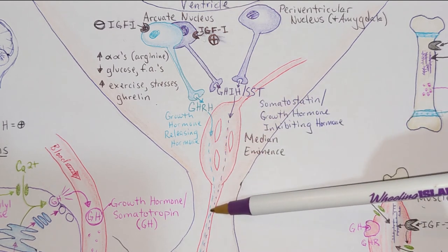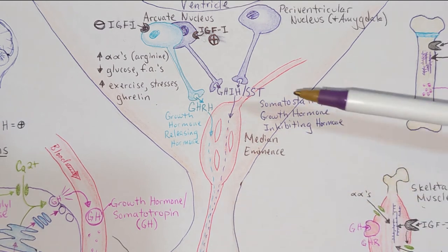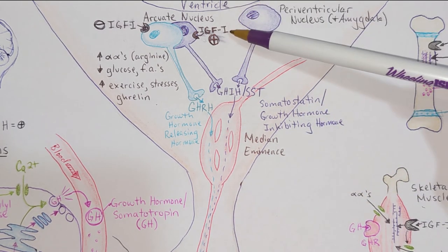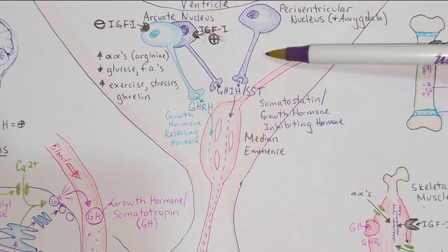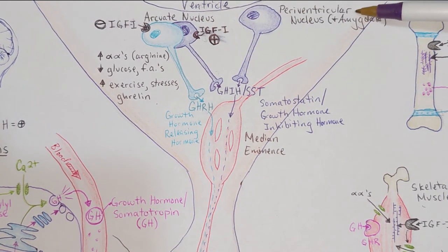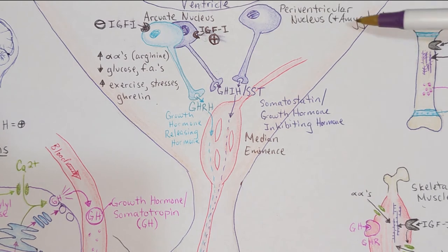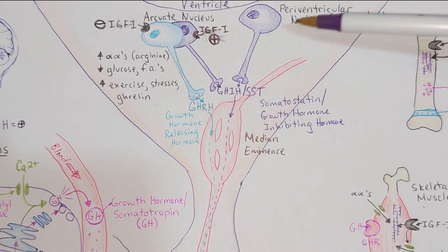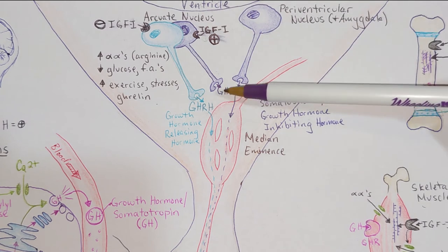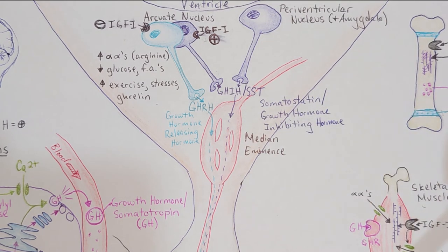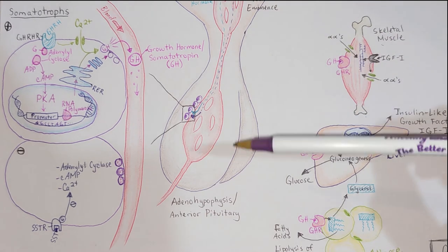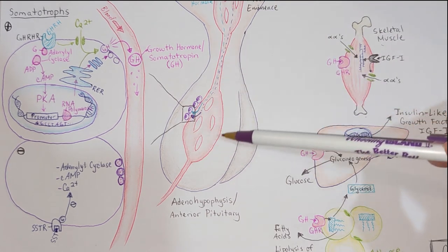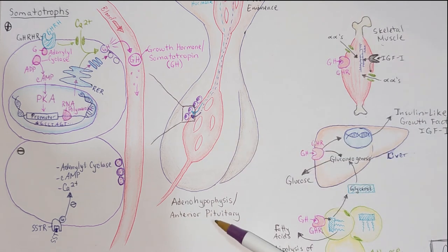IGF-1 induces the release of somatostatin. Additionally, cells located within the paraventricular nucleus and also within the amygdala — the part of the brain responsible for primal emotional states — can also induce the release of growth hormone-inhibiting hormone into the blood of the median eminence. Somatostatin travels to the second capillary bed within the portal system in the anterior pituitary gland.